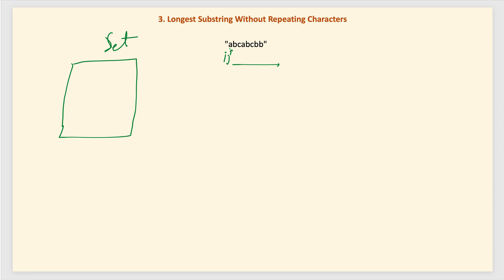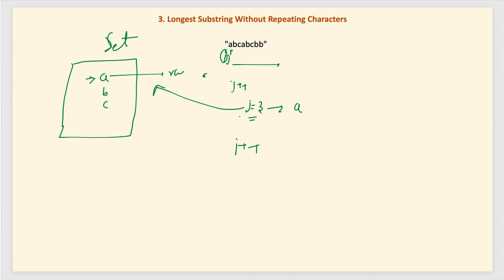When we are at j, we check whether the set contains that character. If not, we increment j and add the character at index j into the set. We keep doing this for 'a', 'b', 'c'. When j becomes 3, we get character 'a' again — it already exists in the set. In that case, we remove the character at index i from the set and increment i, without moving j.